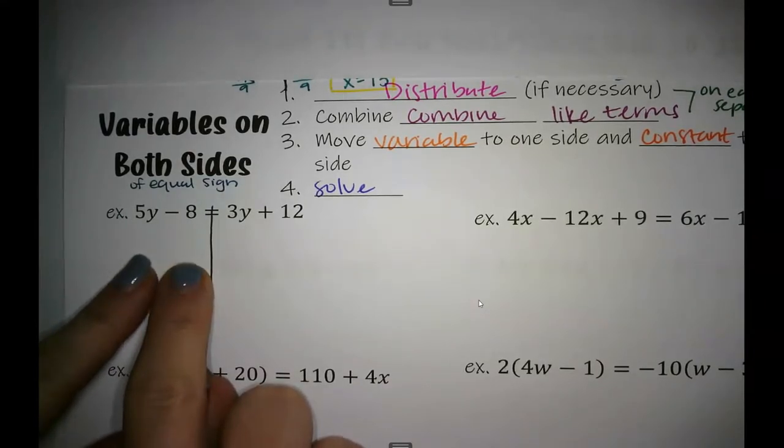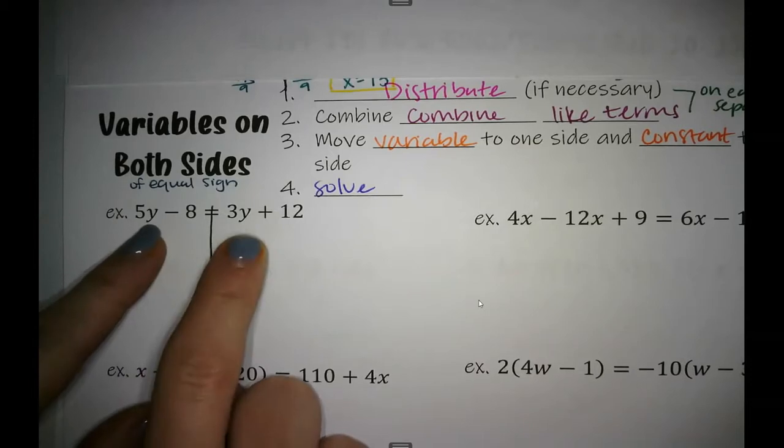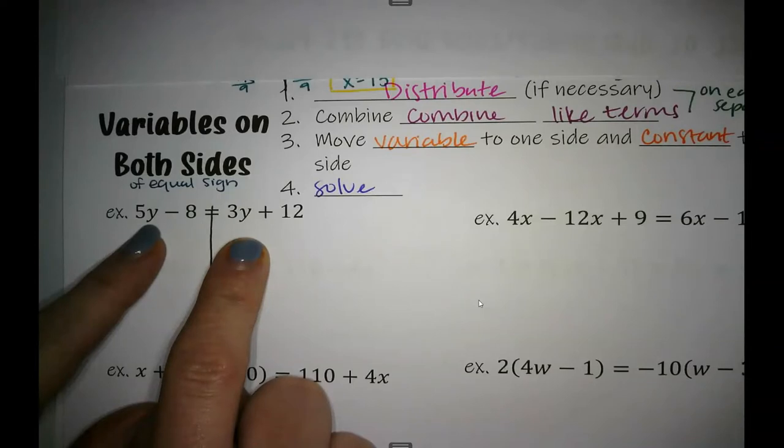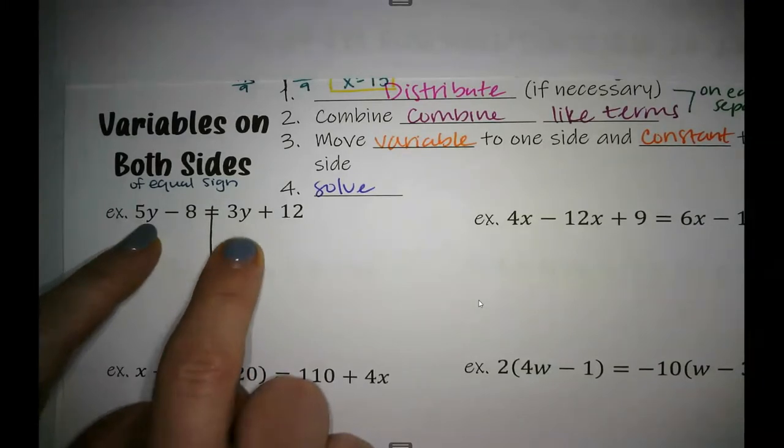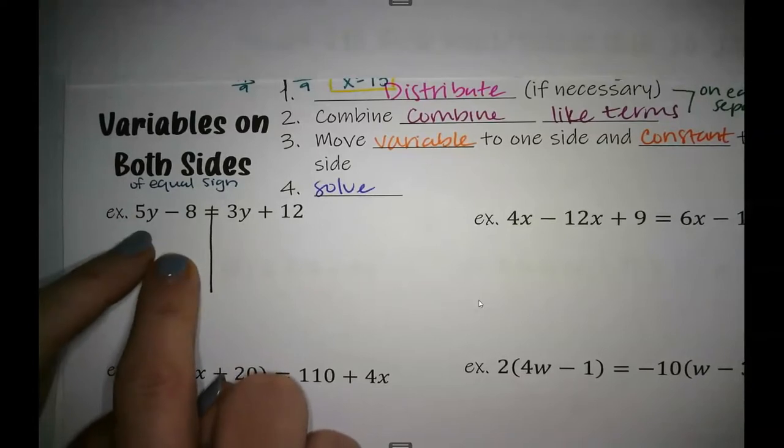I don't like negative numbers. I don't want to make my variable, the number in front of my variable, my coefficient, I don't want to make that negative if possible. So what I look for is the side with the bigger coefficient and then I move everything over there. So we would agree that 5y is bigger than 3y. So I'm going to move this 3y over to this 5y side so that I'm not dealing with a bunch of negatives.